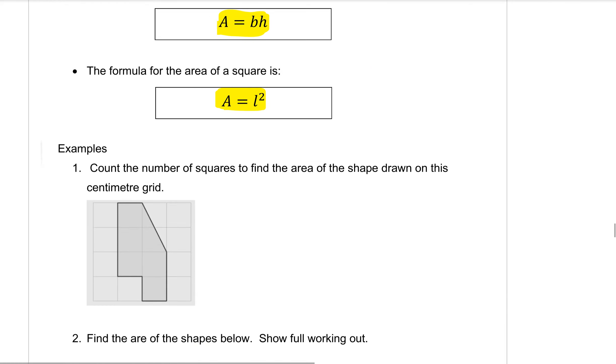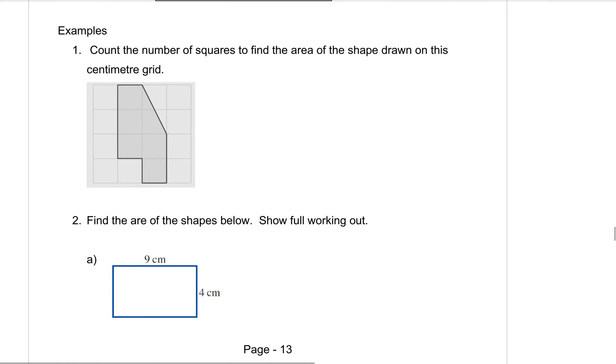So here are some questions for us. Example number one, count the number of squares to find the area of the shape drawn on this centimeter grid. So you can count them up. I'll start with the full ones. I've got 1, 2, 3, 4, 5 complete squares in there and this little triangle here would complete that square which means that together those two parts would make a sixth one. So all together we have 6 centimeters squared because area is always squared for the units.